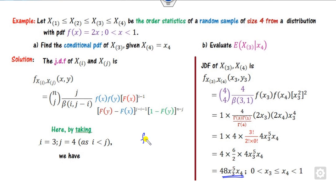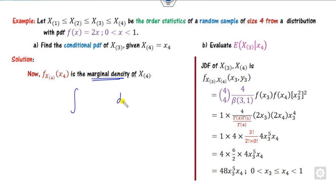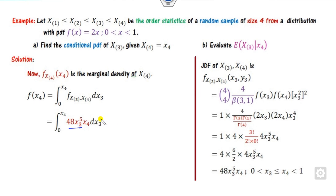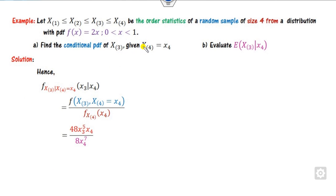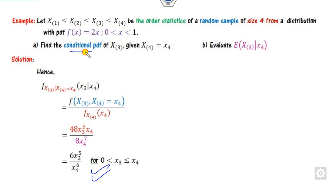Now we want the marginal density function of X4. We compute it by integrating the joint density function over x3 from 0 to x4. With x4 taken as a constant outside the integral, integrating x3 cubed gives x3 to the power 6 divided by 6, evaluated from 0 to x4. This simplifies to 8x4 raised to the power 7. Substituting back into the conditional probability formula, the 8 and x4 terms cancel, giving 6x3⁵ divided by x4⁶ as the required conditional PDF.